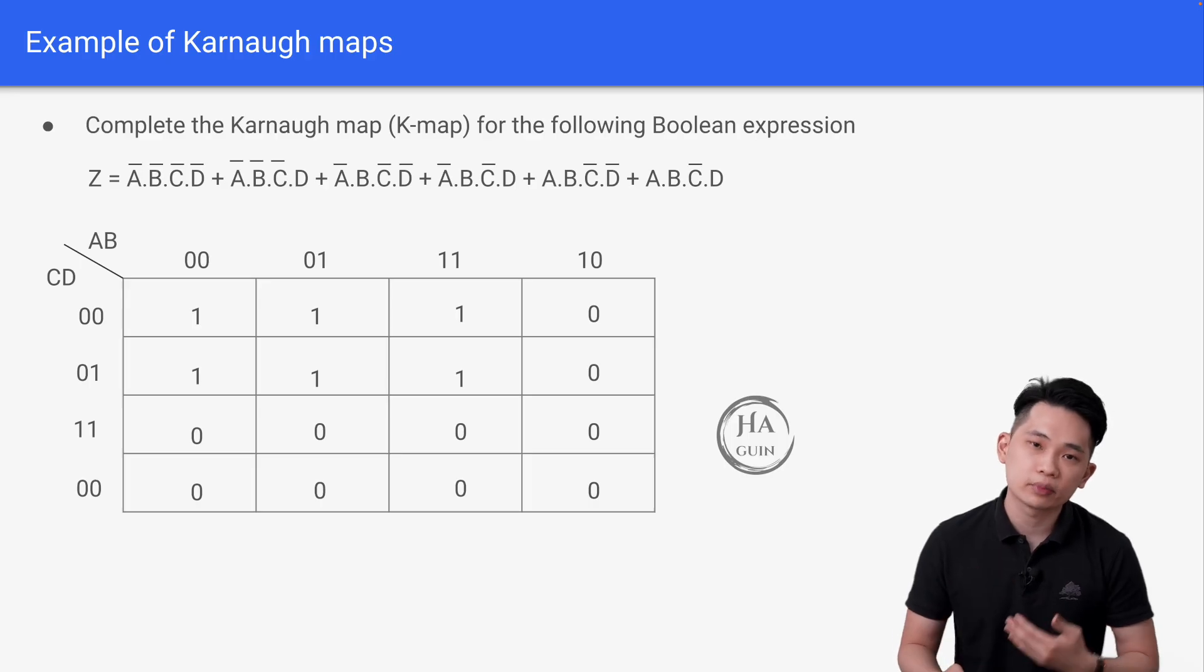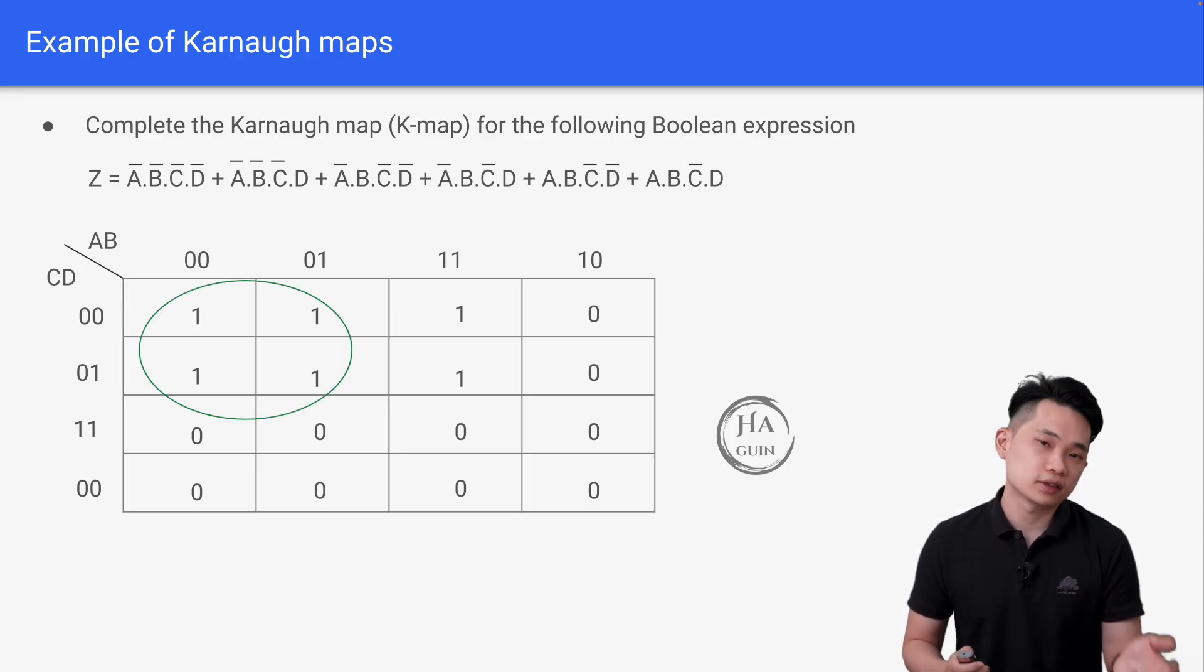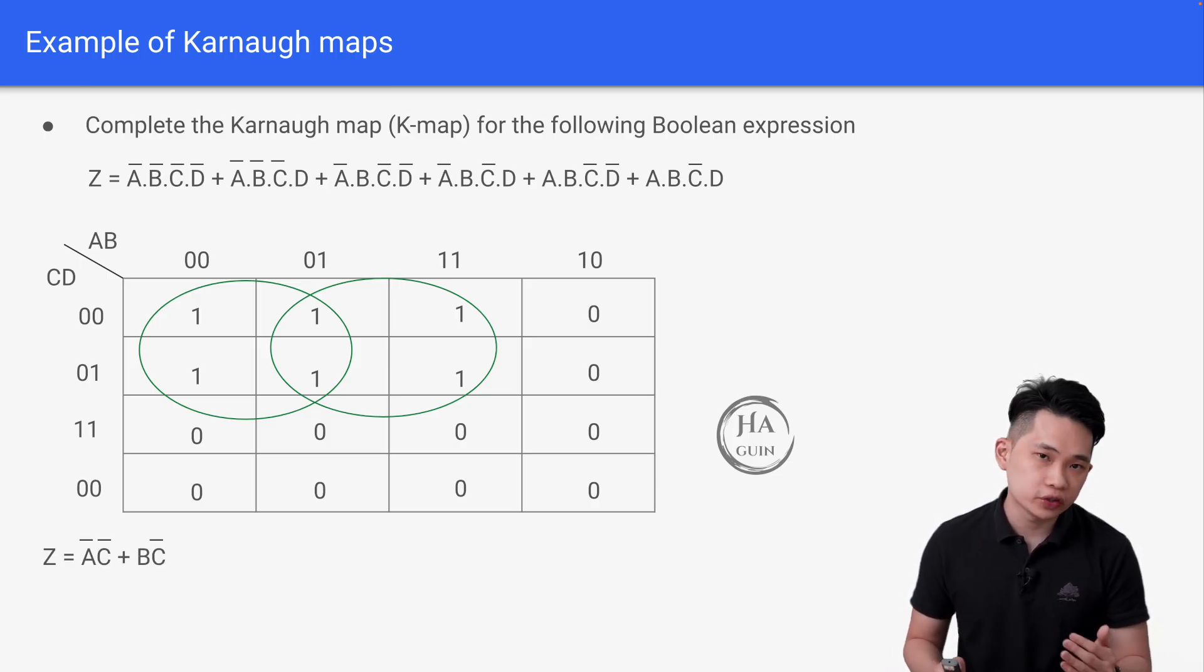Then we can just repeat the 3 steps that I mentioned in the previous slide. So first circle, and then second circle, resulting in this equation here. Then we can simplify the equation using the bracket here.